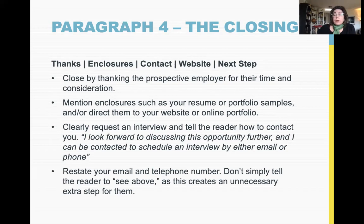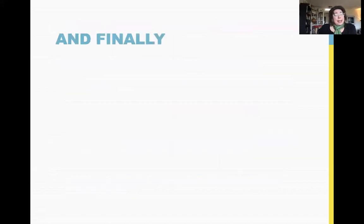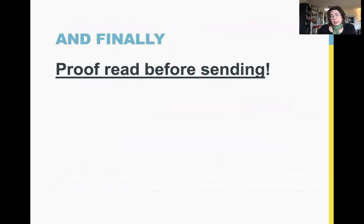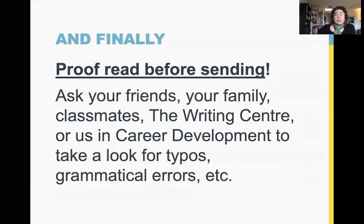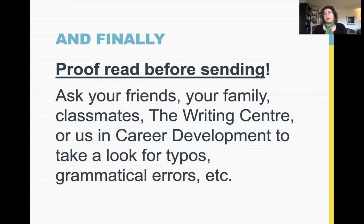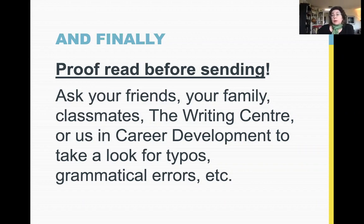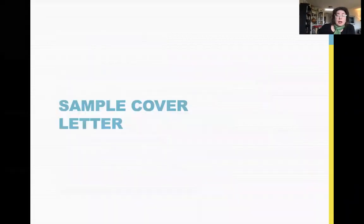Restate your email and telephone number in the closing — don't simply tell the reader to 'see above,' as that creates an unnecessary extra step for them. And finally, I can't stress this enough: proofread before sending. Ask your friends, family, classmates, the writing center, or career development staff to review it for typos, grammatical errors, and so on. Proofreading is critically important. If you want to email the career development office, we're happy to take five or ten minutes to look it over before you send it in.